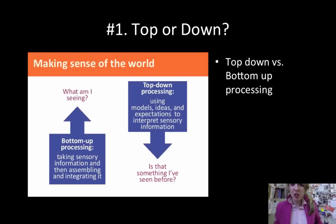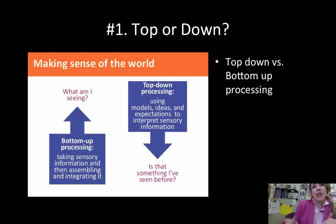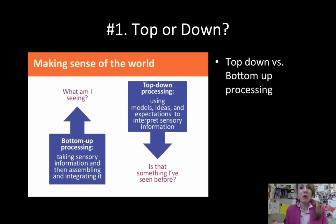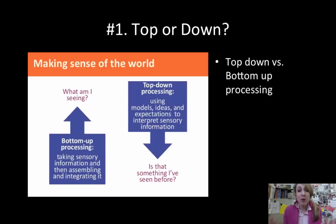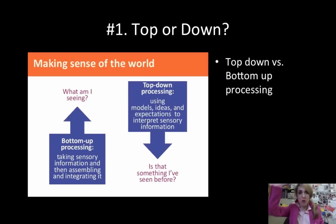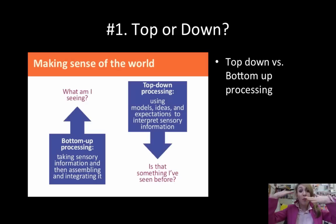So the first thing you need to know is top-down or bottom-up processing. We talk about sensation and perception — there are two ways that we usually look at things. Bottom-up processing is when the information comes from the environment and then goes through anything below the brain — so through your fingertips, your nose, your eyes — and then up to the brain, and the brain analyzes it.